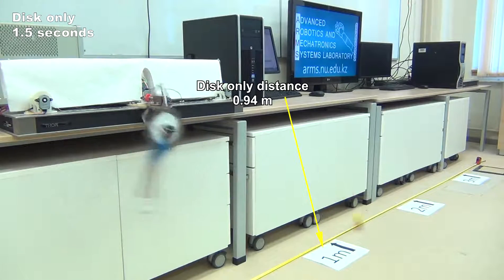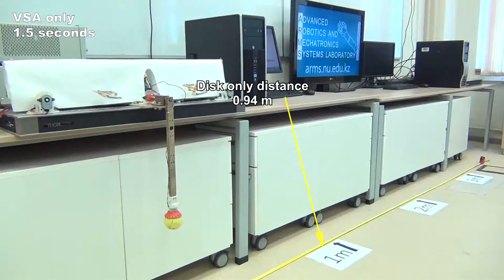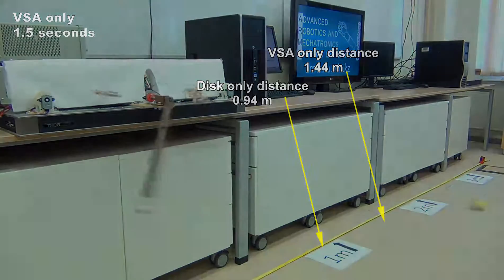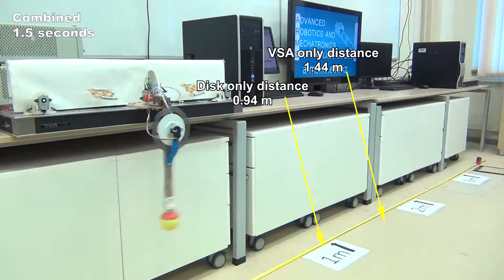If we allow one and a half seconds for the robot motion, the first configuration threw the ball to 0.94 m, the second configuration reached 1.44 m, and the third achieved a distance of 2.67 m.